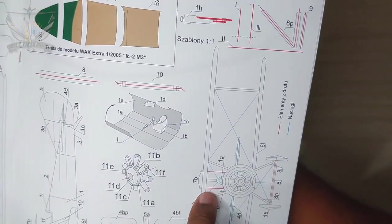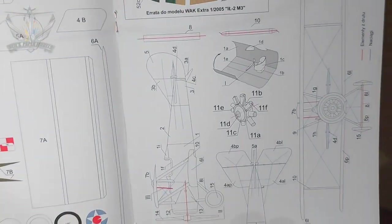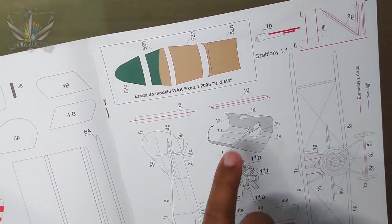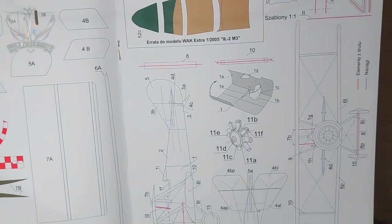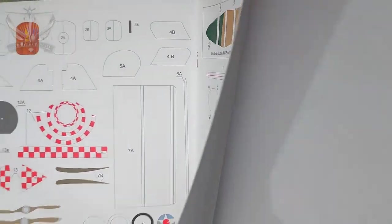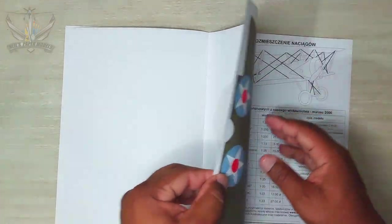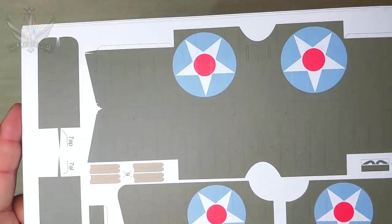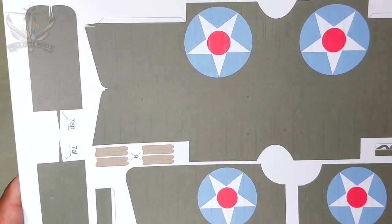It's a very simple cockpit. If you look carefully here, it's just a matter of simple seat, control column, and rudder pedal. Nothing complicated.